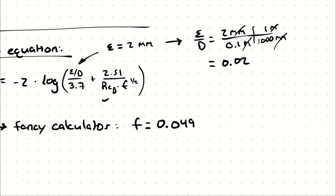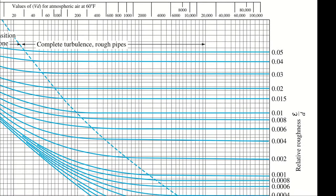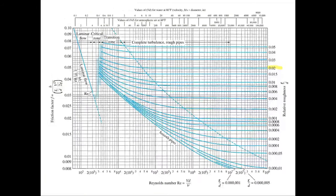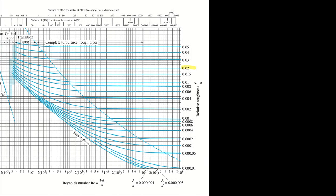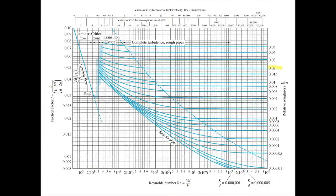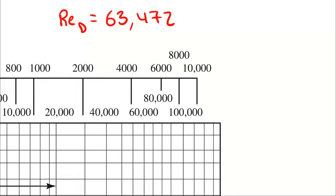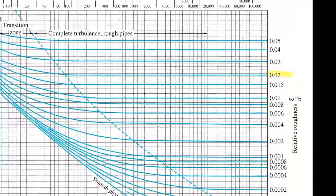So we're going to take our relative roughness, which is 0.02. We're going to find that blue line, which is here. And then we can follow that blue line until we find our Reynolds number. So our Reynolds number was 63,472. I'll write that down. And since everything here is in exponential notation, that would be 6.35 times 10 to the 1, 2, 3, 4th.